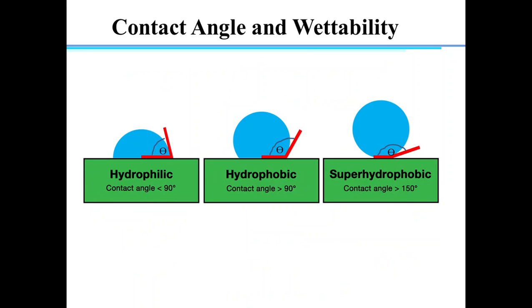If taking liquid is water and contact angle is less than 90 degrees, the surface is hydrophilic. And if the contact angle is greater than 90 degrees, then the surface is hydrophobic. If the contact angle is close to theoretical limit of 180 degrees, then the surface is considered super hydrophobic.